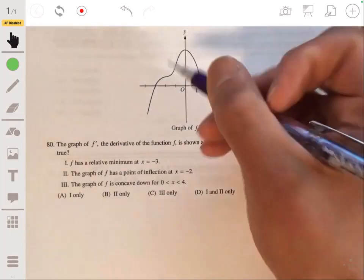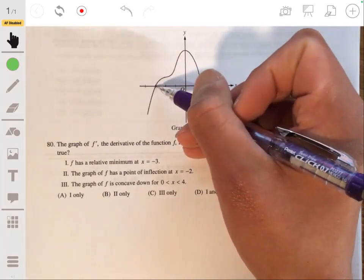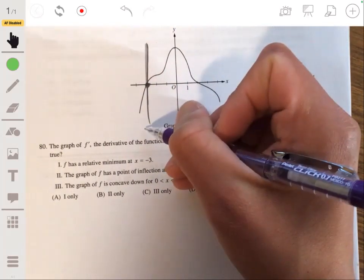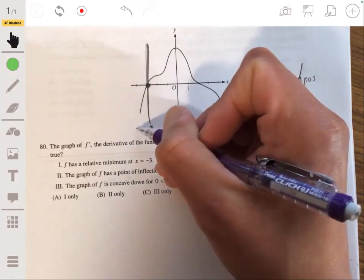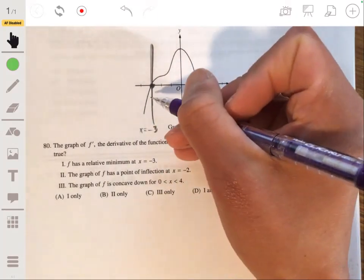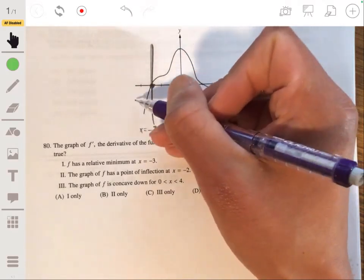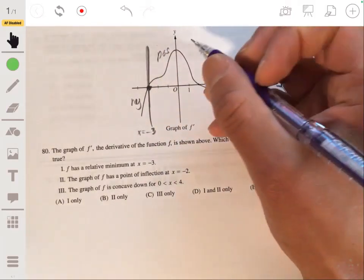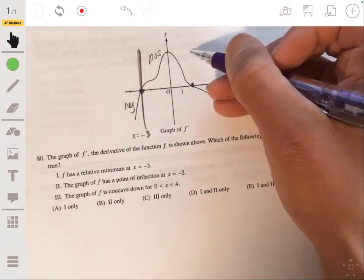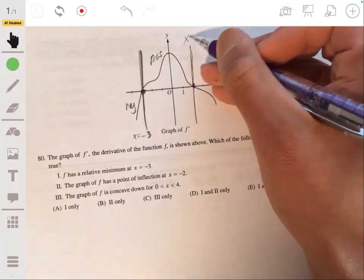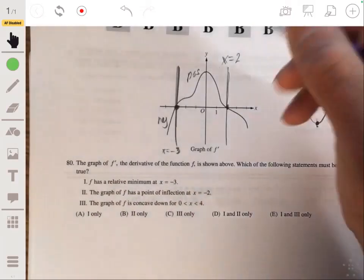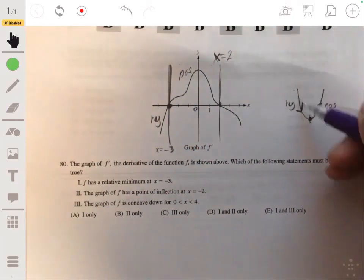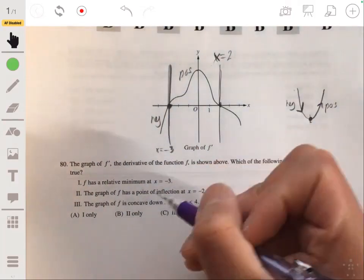So there's a relative minimum when the derivative changes sign from negative to positive. So let's look at negative 3. So negative 3, over here, let's break this into an interval. You can see that on the left of negative 3, the graph is below the x-axis, so it's negative, and after it becomes positive. It stays positive all the way up to x equals 2, so all the way to this point.